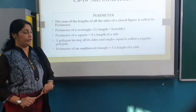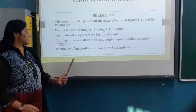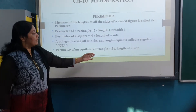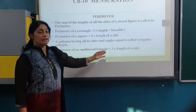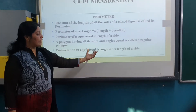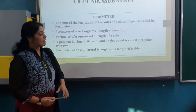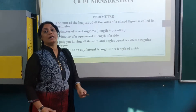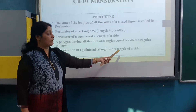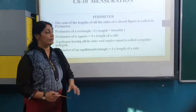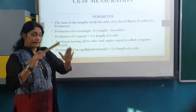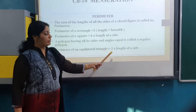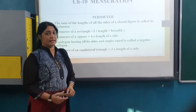Now the next point: perimeter of an equilateral triangle is equal to 3 multiply by length of a side. Why is it 3? Because a triangle has 3 sides. That's why it is 3 multiply by length of a side.